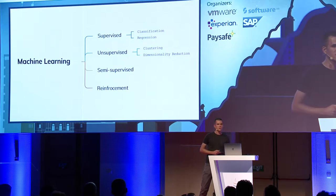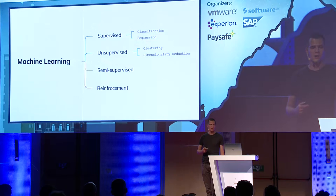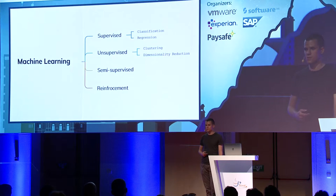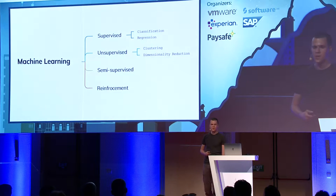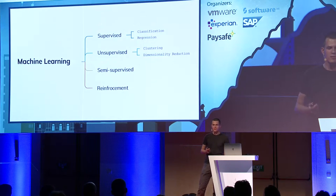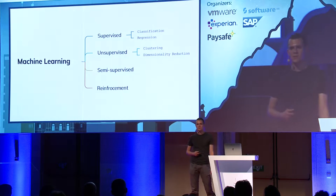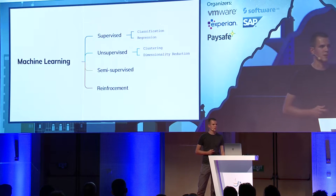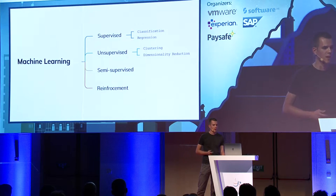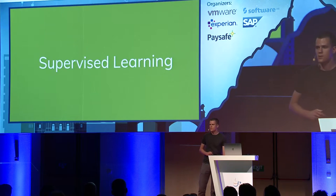Machine learning contains a few categories — a few subtypes. There is supervised, unsupervised, semi-supervised, and reinforcement learning. Let's go through them.